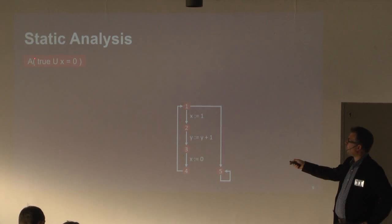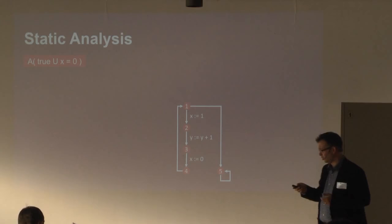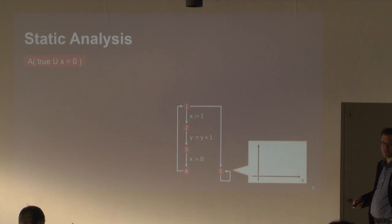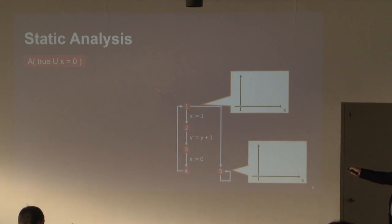Now we look at the full formula: for all, true until x equals zero. We start with the abstract function for the atomic proposition x equals zero and iterate through the program. Starting at the non-terminating loop, if x is zero it's defined, otherwise undefined. That's immediately a fixed point for that inner loop. We push it back in the backward analysis and get the same property at the preceding program point: if x is zero we're good, otherwise undefined.